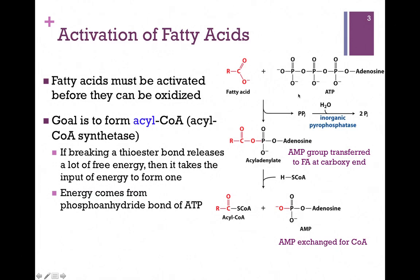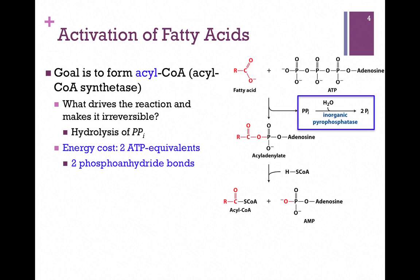We've broken a phosphoanhydride bond in ATP to form a phosphoester bond in our intermediate and exchanged that for a thioester bond — essentially exchanging one type of phospho bond for another. It's a pretty even exchange, so the delta-G would be pretty close to zero. What makes it irreversible? We released inorganic pyrophosphate, and pyrophosphatase will clip that last phosphoanhydride bond, providing enough energy to make this irreversible. The cost in terms of energy is two ATP equivalents: although we only involved one molecule of ATP, we broke two phosphoanhydride bonds.